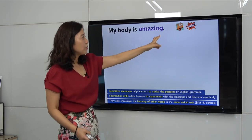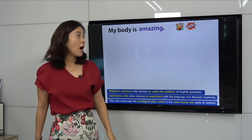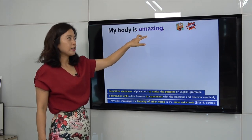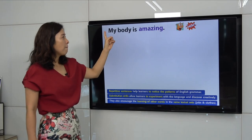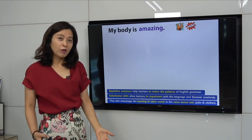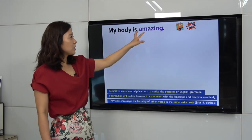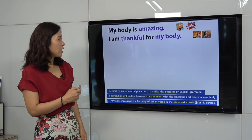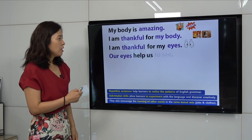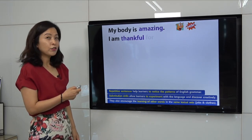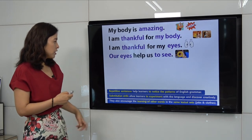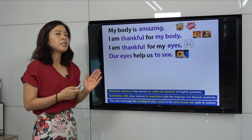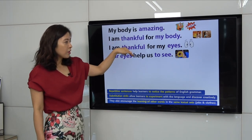We always put a picture with the word — we never translate 'amazing' into Korean. When they see the picture, they connect the word with the image: 'Amazing — wow, this is amazing!' They feel it. 'My body is amazing' — they can also change the word: 'My body is beautiful,' 'My body is awesome.' And 'I am thankful for my body' — they can change it to 'I am thankful for my eyes.' They take turns and do the substitution drill too.